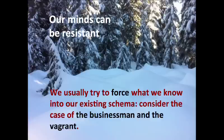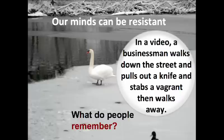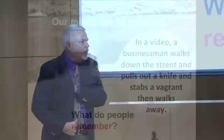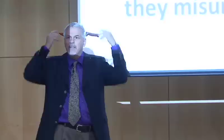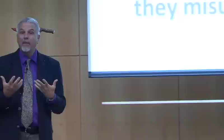To give you a little example, we're going to consider the case of the businessman and the vagrant — a very famous psychological experiment. They created a short video: a businessman walking down the street pulls out a knife and stabs the vagrant. They stopped the film and asked everyone what happened. People said the vagrant was walking down the street and stabbed the businessman — totally mixed up. This is a problem that happens all the time.